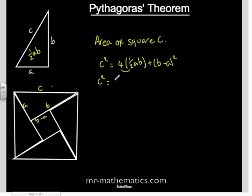So C squared is, multiplying these brackets out, 2AB plus B minus A times B minus A. So C squared equals 2AB plus B squared.